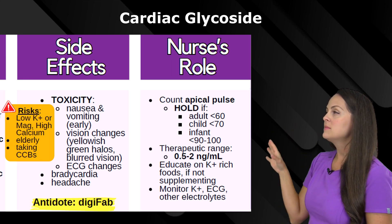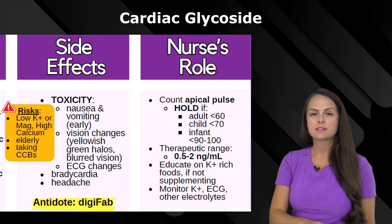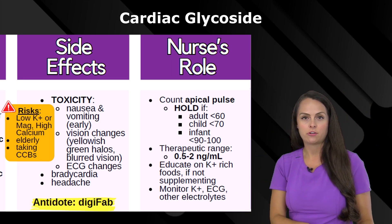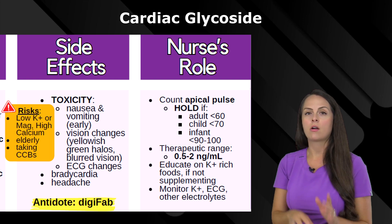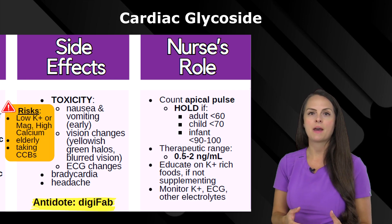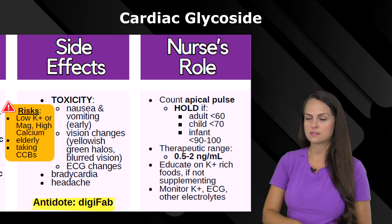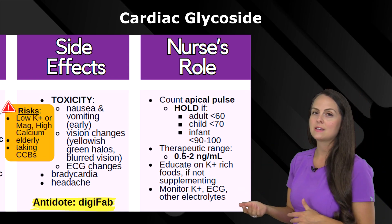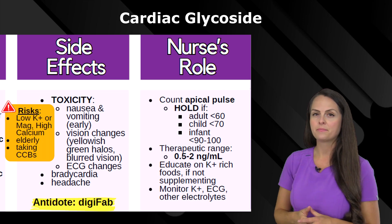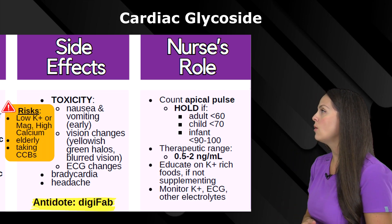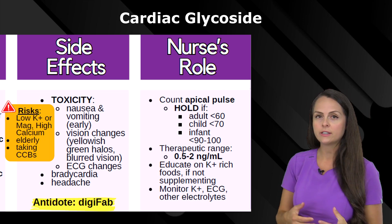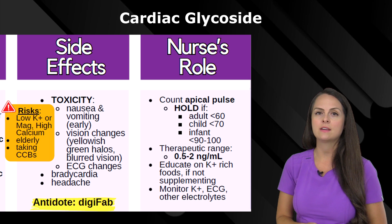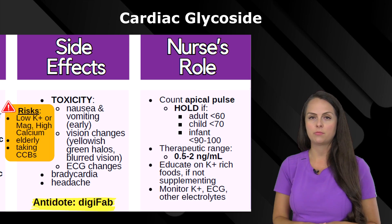There are some things that increase your patient's risk of developing digoxin toxicity. One thing is electrolyte imbalances — a big one is potassium. If the potassium drops too low, it can increase digoxin toxicity. Also a low magnesium can do this, and a high calcium. Plus patients who are elderly are at risk, or if they're taking calcium channel blockers.